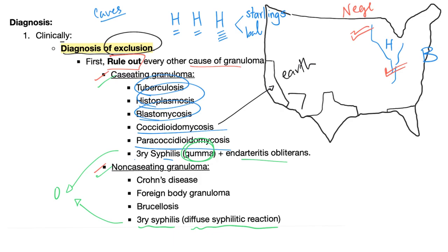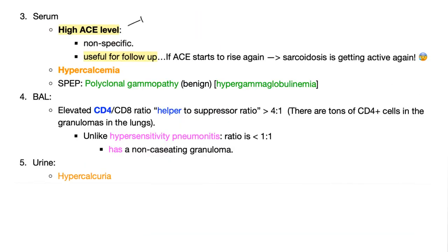Paracoccidioidomycosis causes non-caseating granuloma, as does Crohn's disease, foreign body granuloma, brucellosis, and even hypersensitivity pneumonitis. I've compared hypersensitivity pneumonitis and sarcoidosis in a previous video. In serum, you have a high ACE level — this is non-specific but very useful to follow up sarcoidosis.